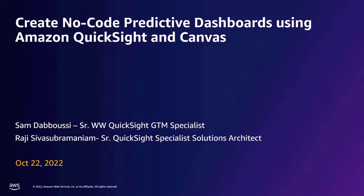Thank you for joining the AWS team to learn how you can create no-code predictive dashboards using Amazon QuickSight and Canvas, all done with no-code, low-code development. The idea is, however raw your data might be, you will learn how to curate, cleanse, and prep your data using AWS DataBrew, then create a machine learning model using Canvas, before you visualize the data in Amazon QuickSight. Finally, you will learn about deploying natural language query searches using QuickSight Q, which will empower your users to ask business questions in plain English and get instant insights.